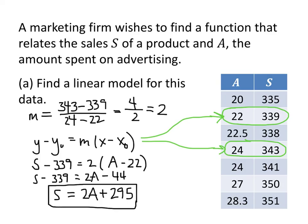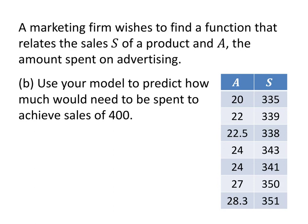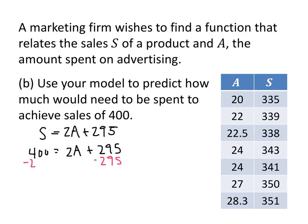Note that this isn't the only possible model — choosing a different reasonable pair of points would give a different result. Now, as a follow-up application: how much do we need to spend on advertising to achieve a sales level of 400? Using our model S = 2A + 295, we set S = 400: 400 = 2A + 295. Subtracting 295 from both sides gives 2A = 105, and dividing by 2 gives A = 52.5. So we need to spend 52.5 (thousands of dollars, perhaps) on advertising to achieve that sales level.